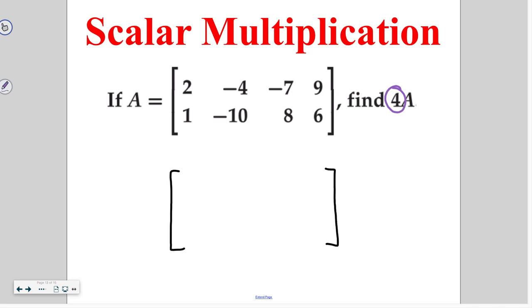So we're going to start with 2 times 4, which is going to give us 8, -4 times 4 is -16, -7 times 4 is -28, 9 times 4 is 36, 1 times 4 is 4, -10 times 4 is -40, 8 times 4 is 32, and 6 times 4 is 24. So we've just taken the whole matrix and multiplied it by a scalar of 4.